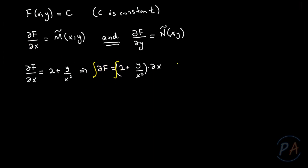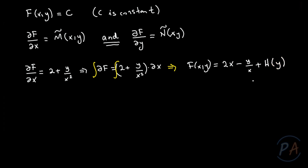This equation can be written as dF = (2 + y/x²)dx. Integrating both sides, F(x,y) = 2x - y/x + h(y), where I add a generic function h(y) instead of an integration constant.